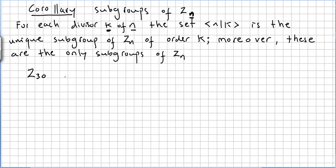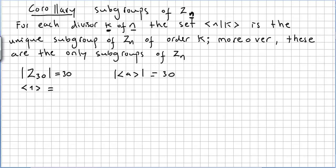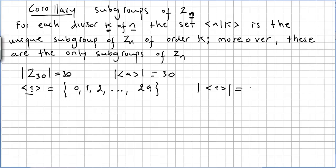So we can do the same as we did to the previous group, where we set A with order 30. So Z_30 has order 30. This group Z_30 is generated by 1, which gives 0, 1, 2, and so on up to 29. The order of 1 is 30 divided by 1, which is 30.